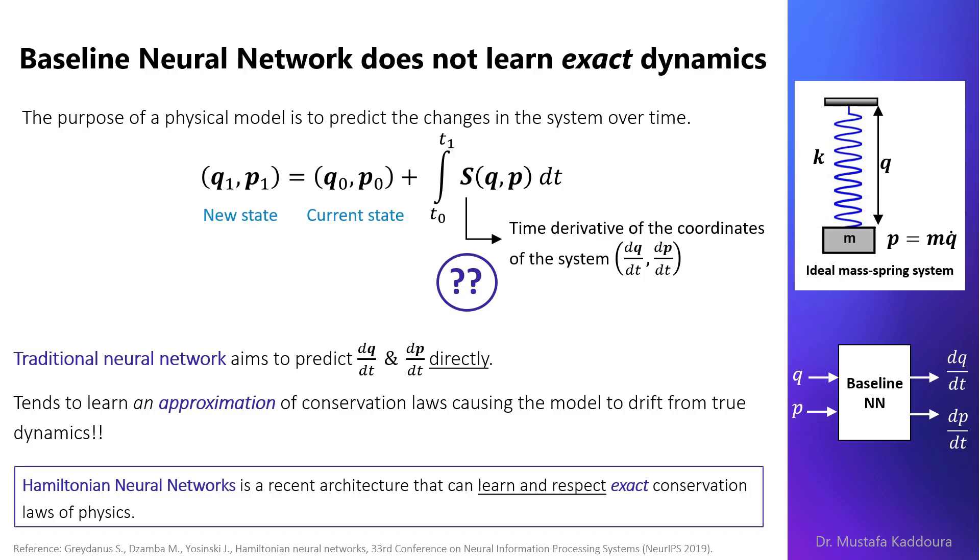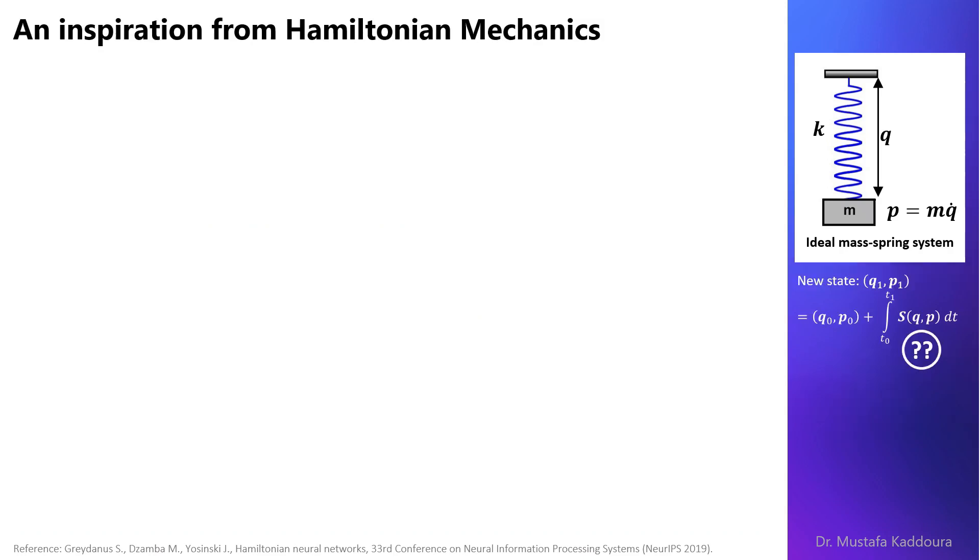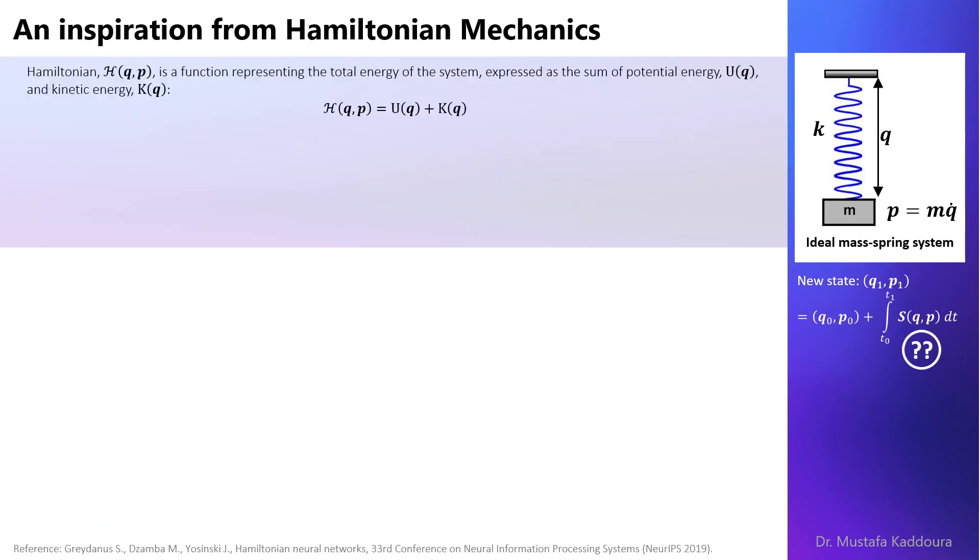Hamiltonian neural networks are inspired from Hamiltonian mechanics. Let's first have a brief background on Hamiltonian mechanics. A Hamiltonian is a function representing the total energy of the system expressed as the sum of potential energy u and kinetic energy k.